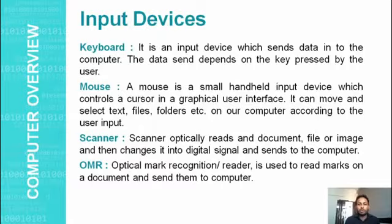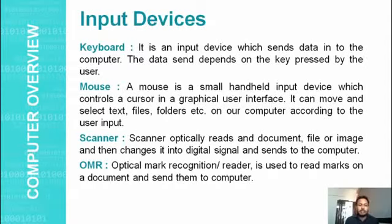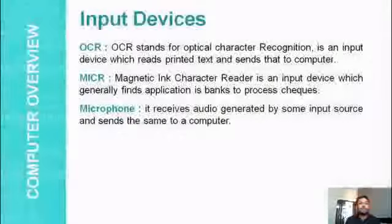Next is the scanner, which scans a document and saves it to the computer memory in digital form. OMR — Optical Mark Recognition or Optical Mark Reader — is used to read the marks on a document. When we fill OMR sheets in competitive exams, those sheets are read by the OMR reader, which reads the sheets and sends the data to the computer. That's why it is an input device.